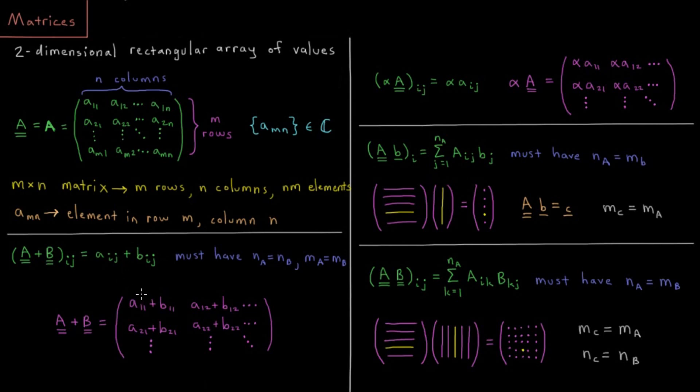In matrix addition, you just add the elements together one by one. Element 11 is A11 plus B11, element 21 is A21 plus B21, and so on out to the edge of the entire matrix.